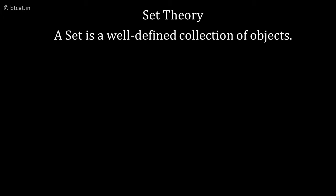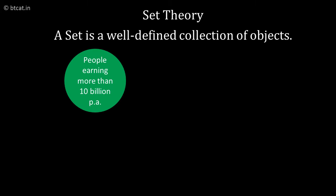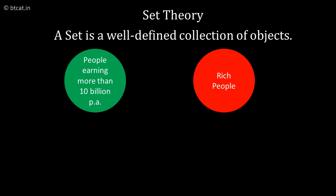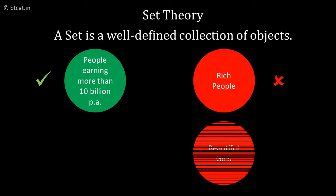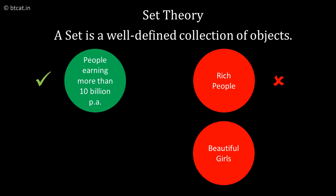You can have a set of people who are earning more than 10 billion per annum, but you cannot have a set of rich people. This is not a set. Why? Because rich people is not defined properly. Again, you cannot have a set of beautiful girls. It depends on perception. As there is a famous dialogue, beauty lies in the eyes of the beholder.